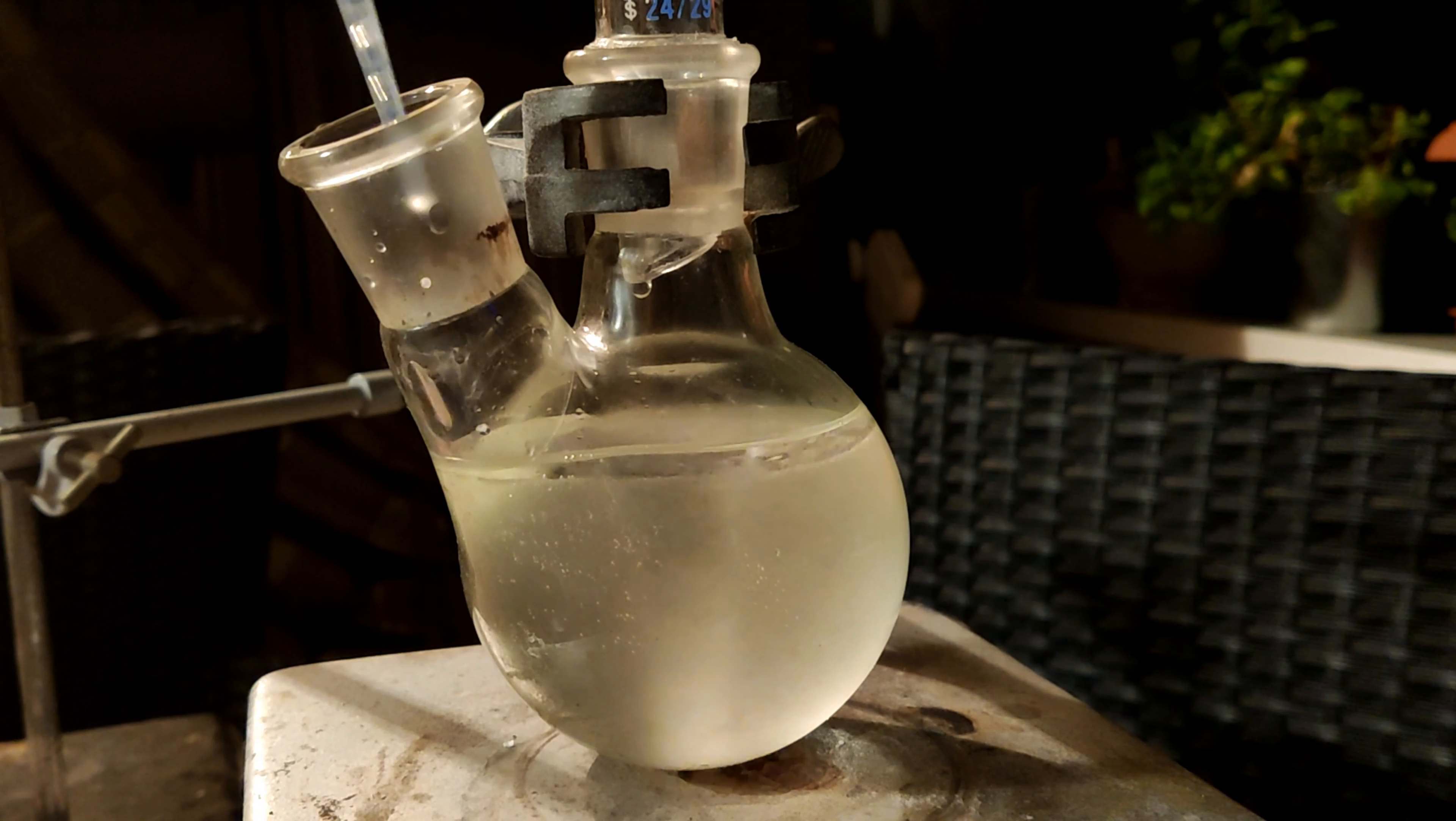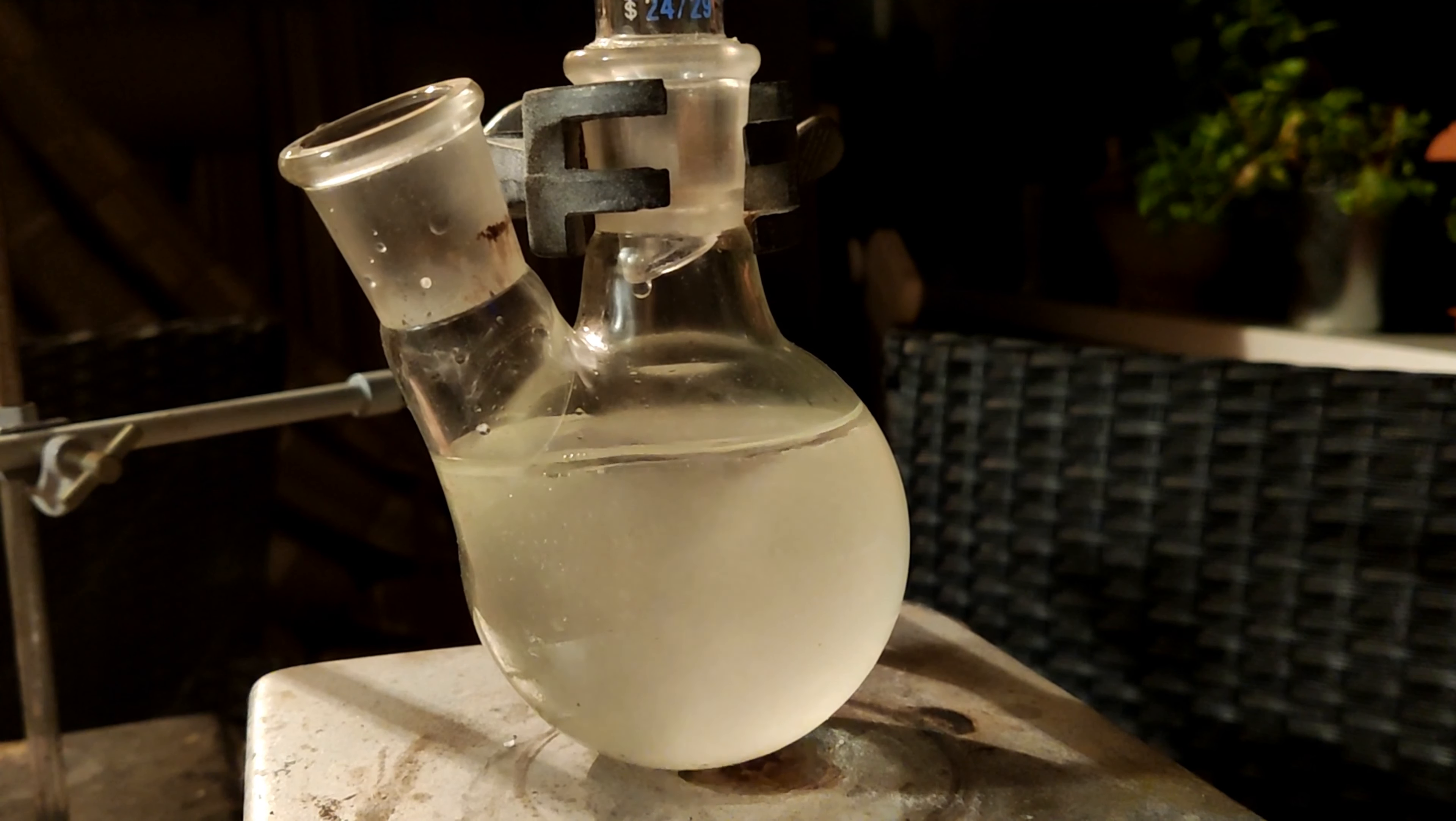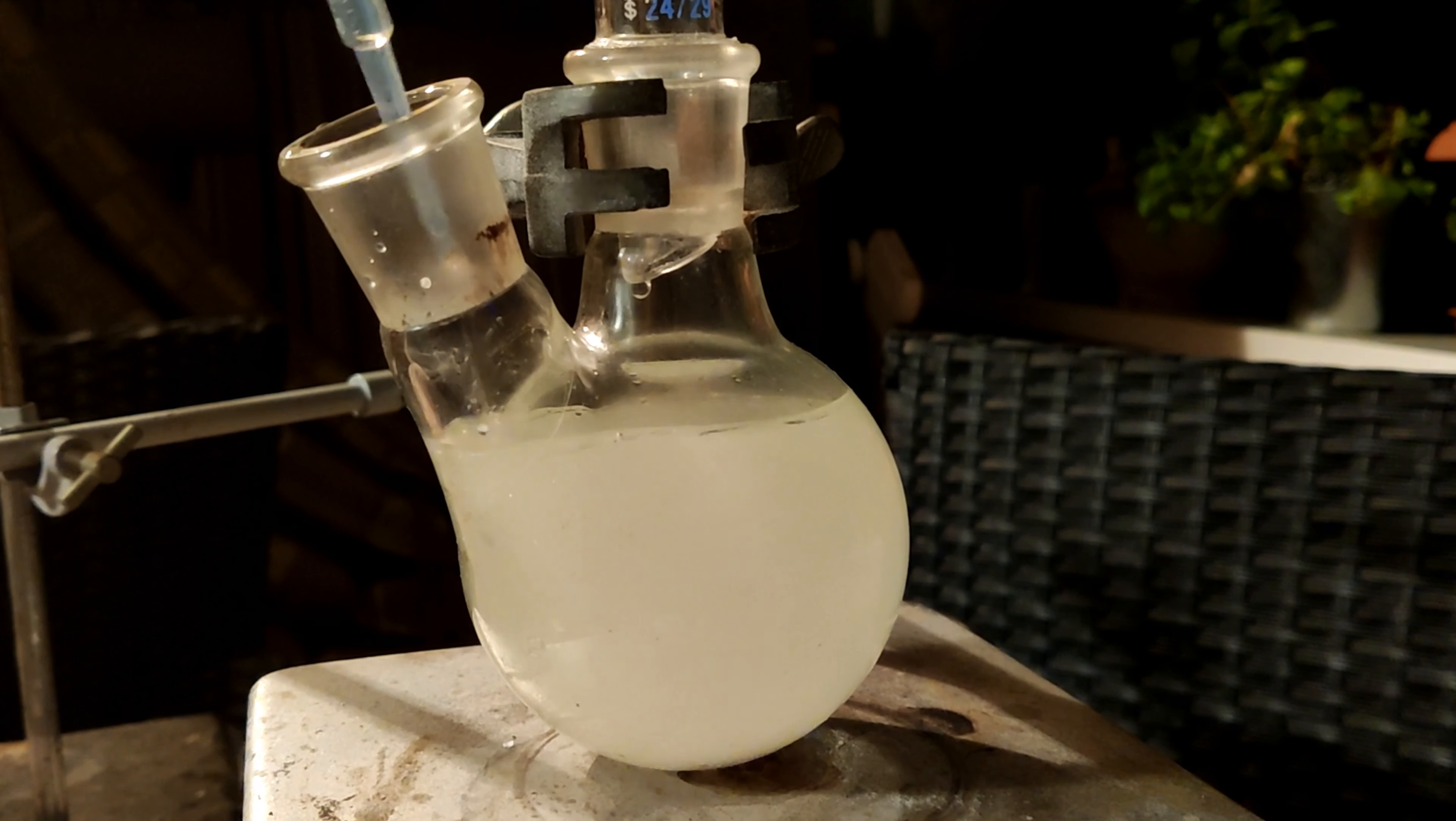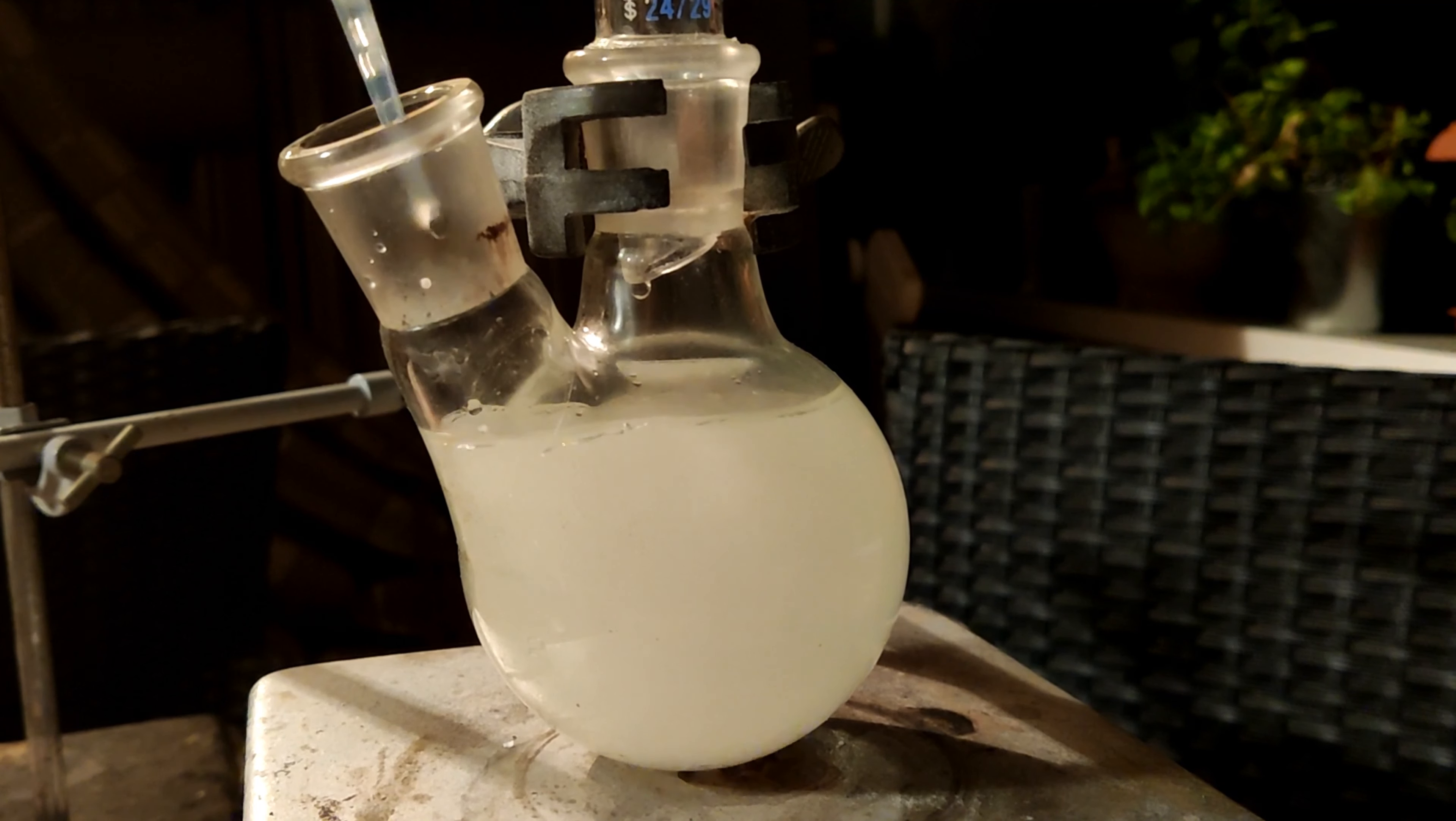To this we then add 40.6 grams of cyclohexanol which has been melted beforehand. I'm using a pipette here because it's pretty viscous, and to minimize losses I put the storage bottle on the scale and pipetted 40.6 grams out of it so I have the accurate amount of cyclohexanol in my reaction.